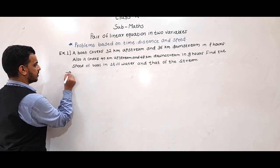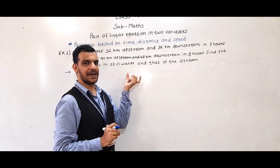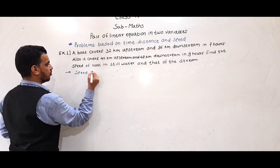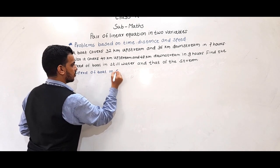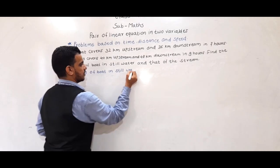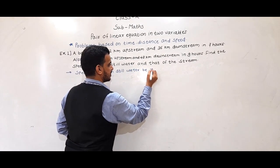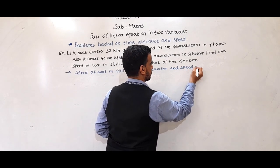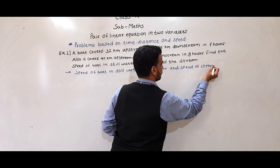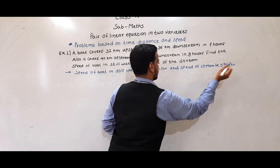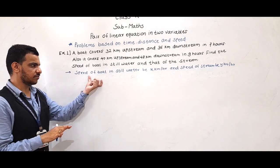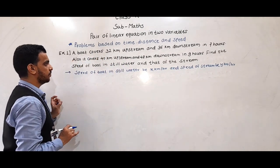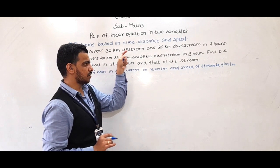So we have to find the speed of the boat in still water and the speed of the stream. We suppose that the speed of the boat in still water is x km per hour, and the speed of the stream is y km per hour. Now, when the boat goes upstream —